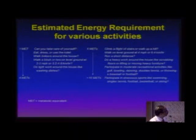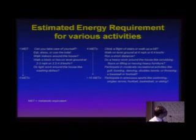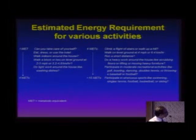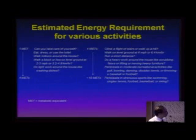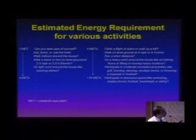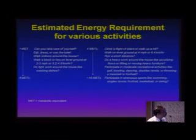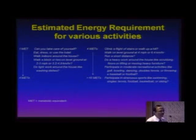This is a simple way of asking your patient about functional capacity. Can you take care of yourself — eat, dress, or use the toilet? That is 1 MET. Walk indoors inside the house. If you can walk a block or two on a level ground at around two or three miles per hour — a leisurely walk — it is around 3 METs. Light work around the house like washing dishes is around 3.5 METs. Four METs: climb a flight of stairs or walk up a hill. Heavy work like scrubbing floors or moving heavy furniture is around 6 METs. And it goes up to seven, eight, and ten METs.